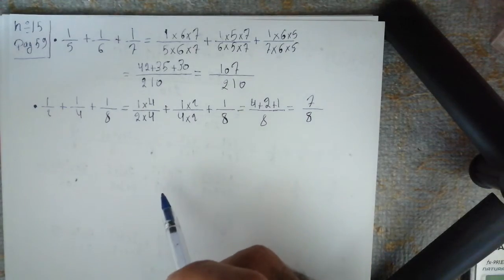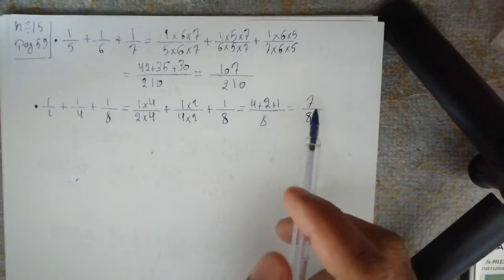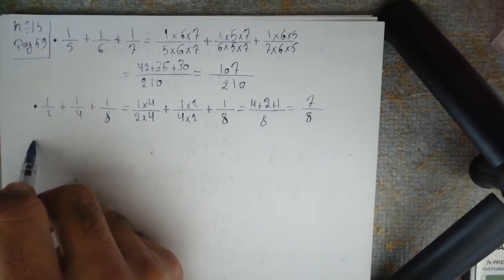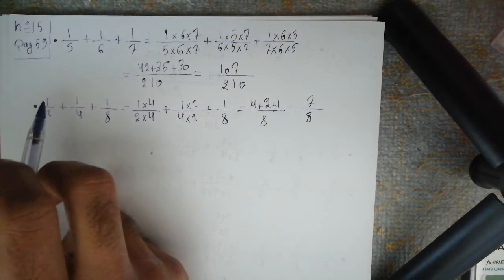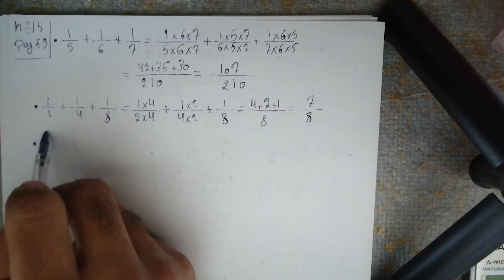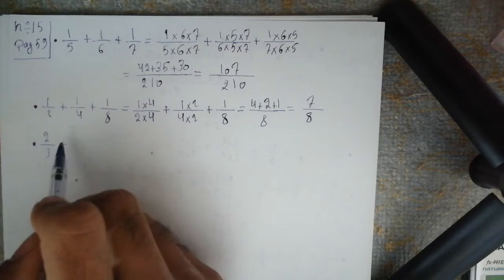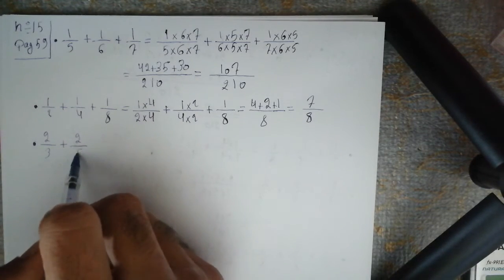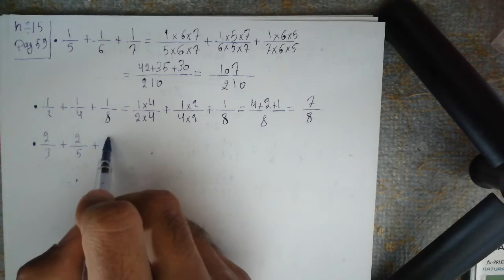Second numerator: 1 times 2 equal to 2. Third numerator is 1. The answer is 4 plus 2 plus 1 equal to 7 over 8. Between 7 and 8 there is no common divisor, so we cannot simplify. Third expression: 2 over 3 plus 2 over 5 plus 2 over 7.